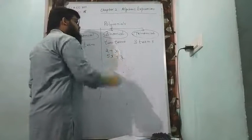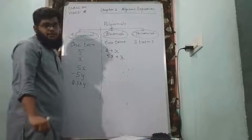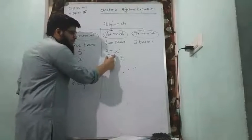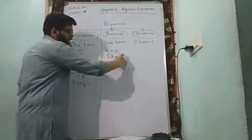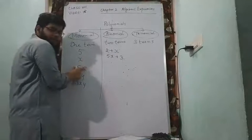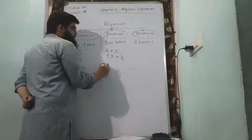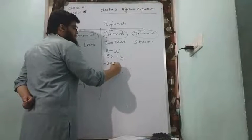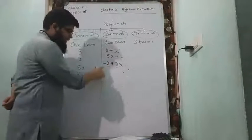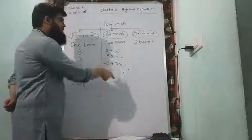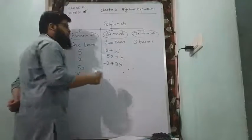5x plus 3. What do you think this is, monomial or binomial? Binomial because there are two terms. 5x should be treated as one single term and 3. You can also have minus 2 plus 3x. You can also have a negative sign. Again it is separated by a plus sign in between. So these are examples of binomials where we have two terms.